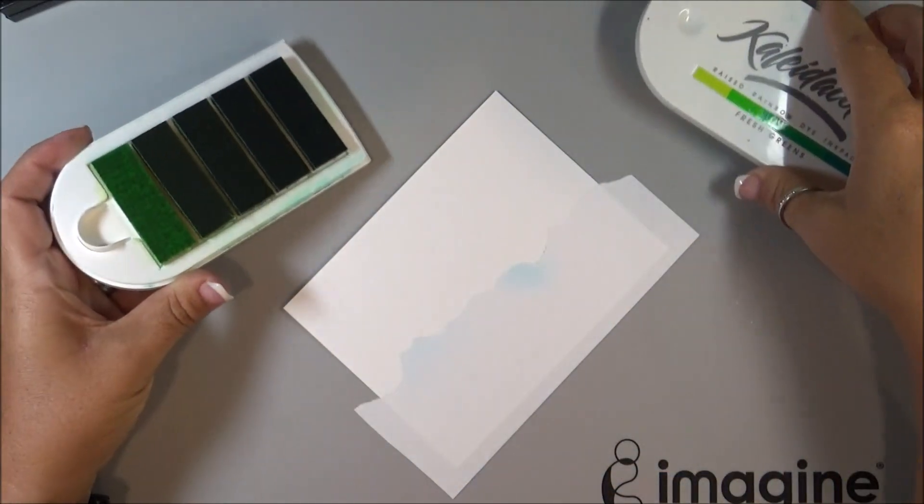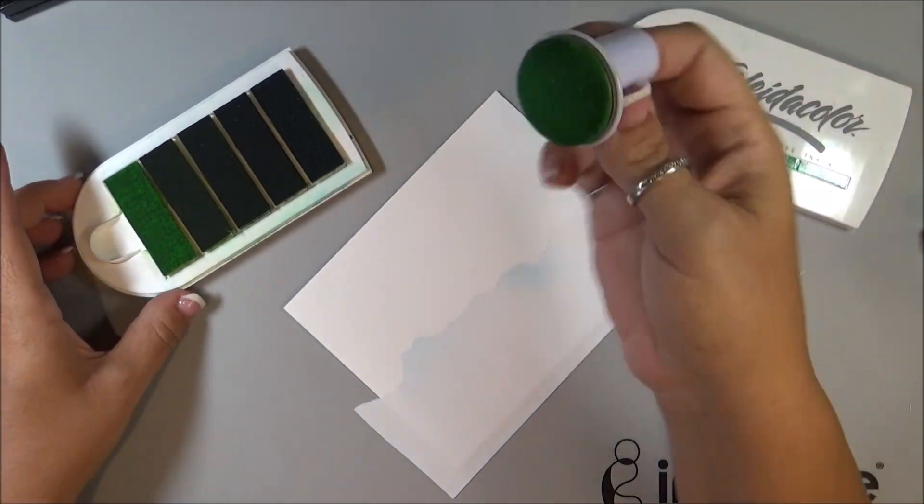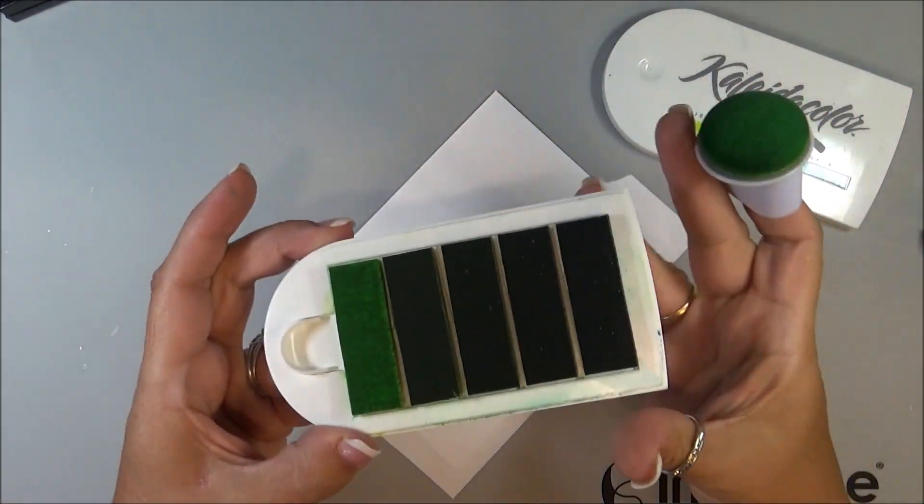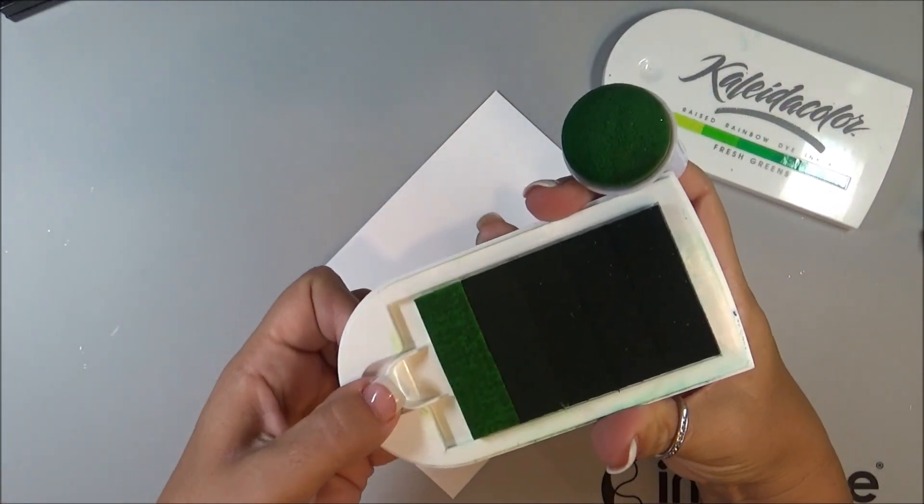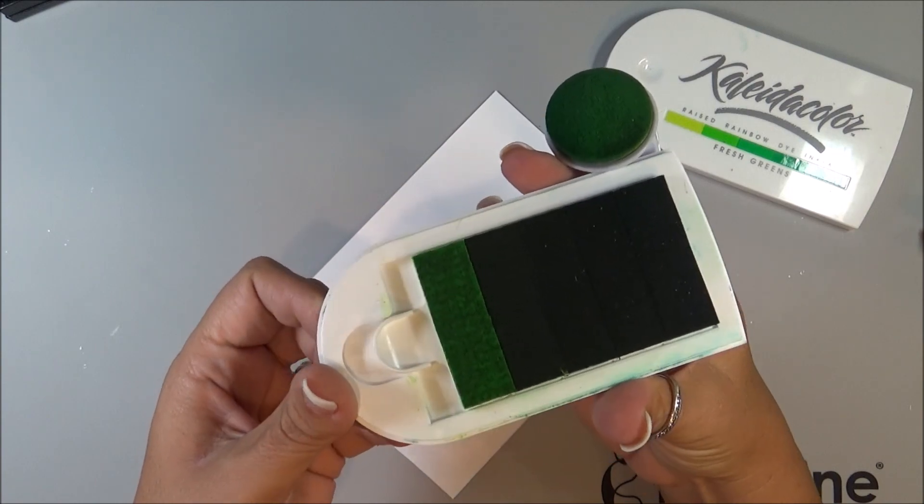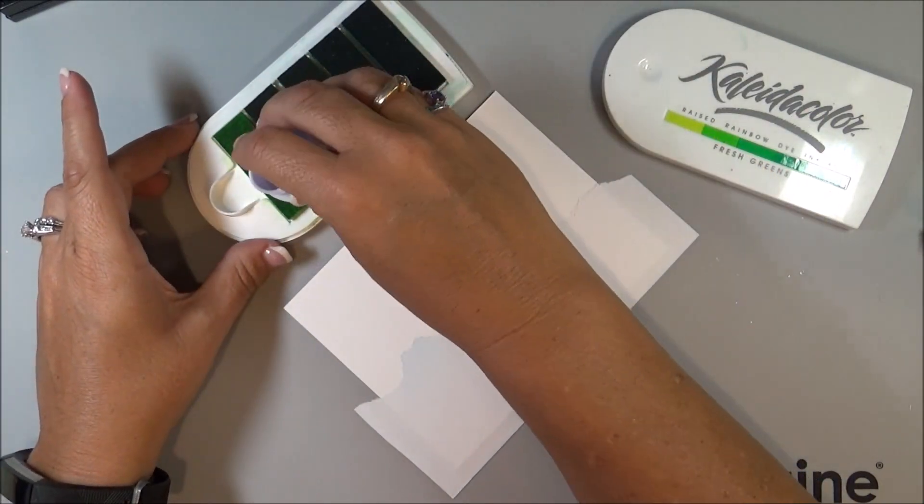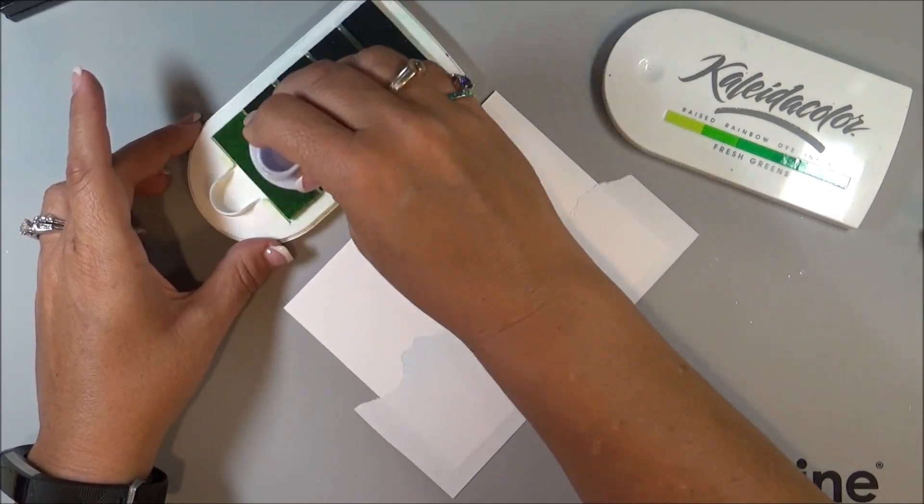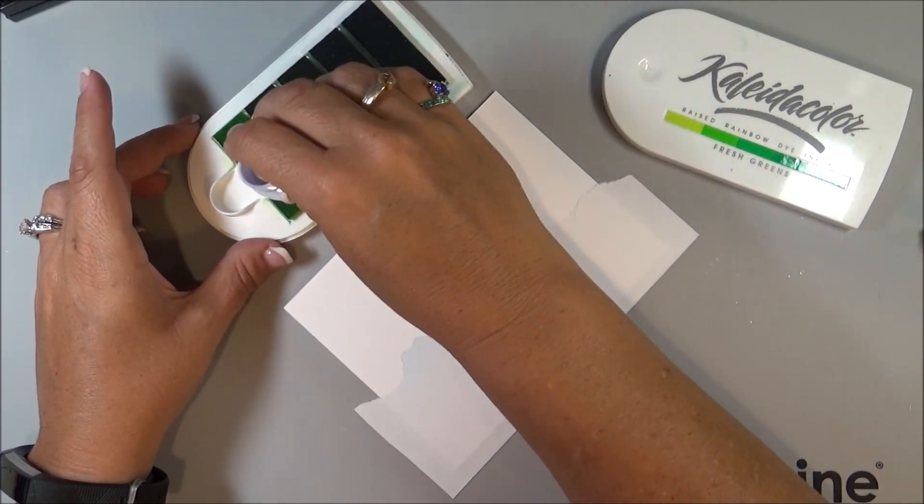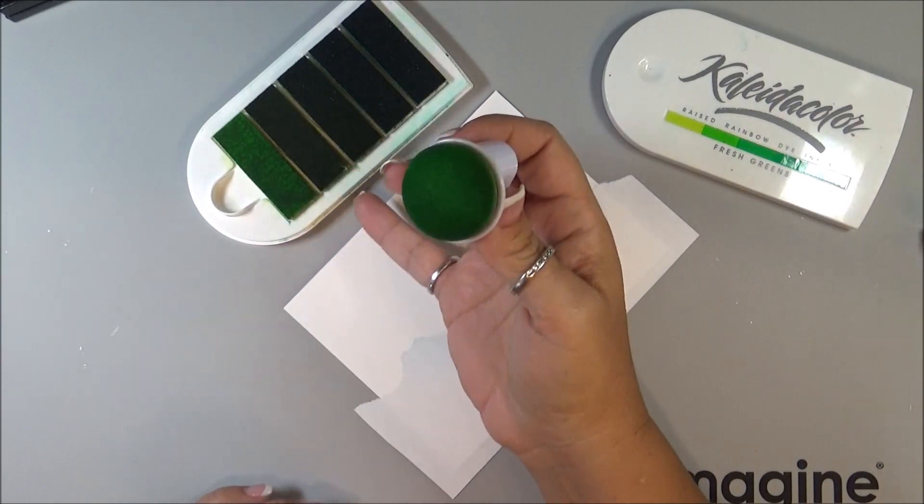And then using the Kaleidacolor and the dauber, I'm going to start on the lighter end. The Kaleidacolor, you can slide them together so the colors are all together or apart. Right now, it doesn't really matter, so I'm going to keep them apart, and going like half and half where I'm getting a little bit lighter and a little bit darker, the darker one up.